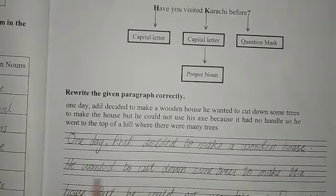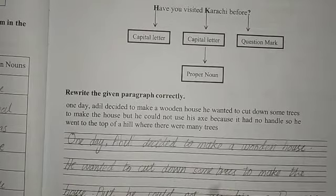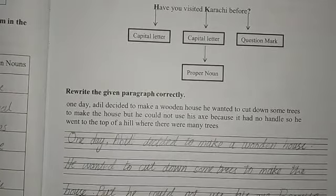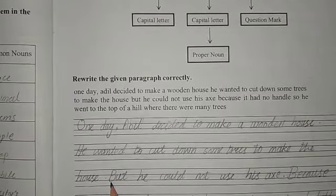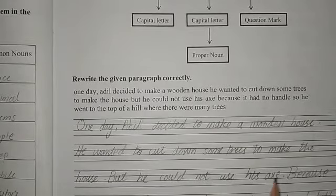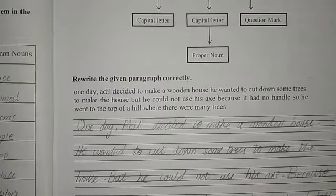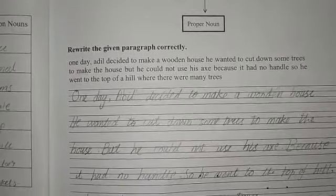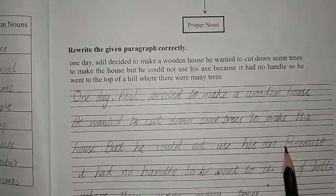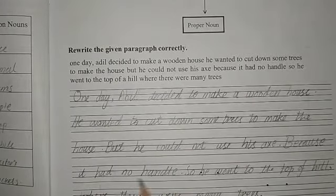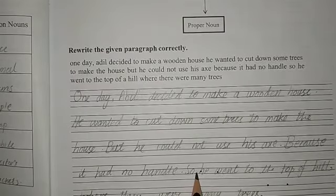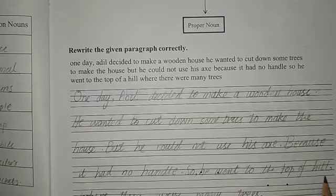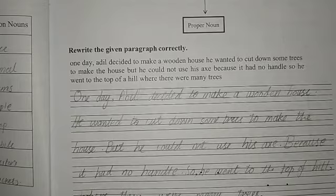Next sentence begins with capital letter: 'He wanted to cut down some trees to make the house.' It's a simple sentence, so you will draw a full stop. 'But he could not use his axe' — full stop. 'Because it had no handle' — B of 'because' would be capital and we put a full stop after 'handle.' 'So he went to the top of a hill' — comma — 'where there were many trees' — full stop.